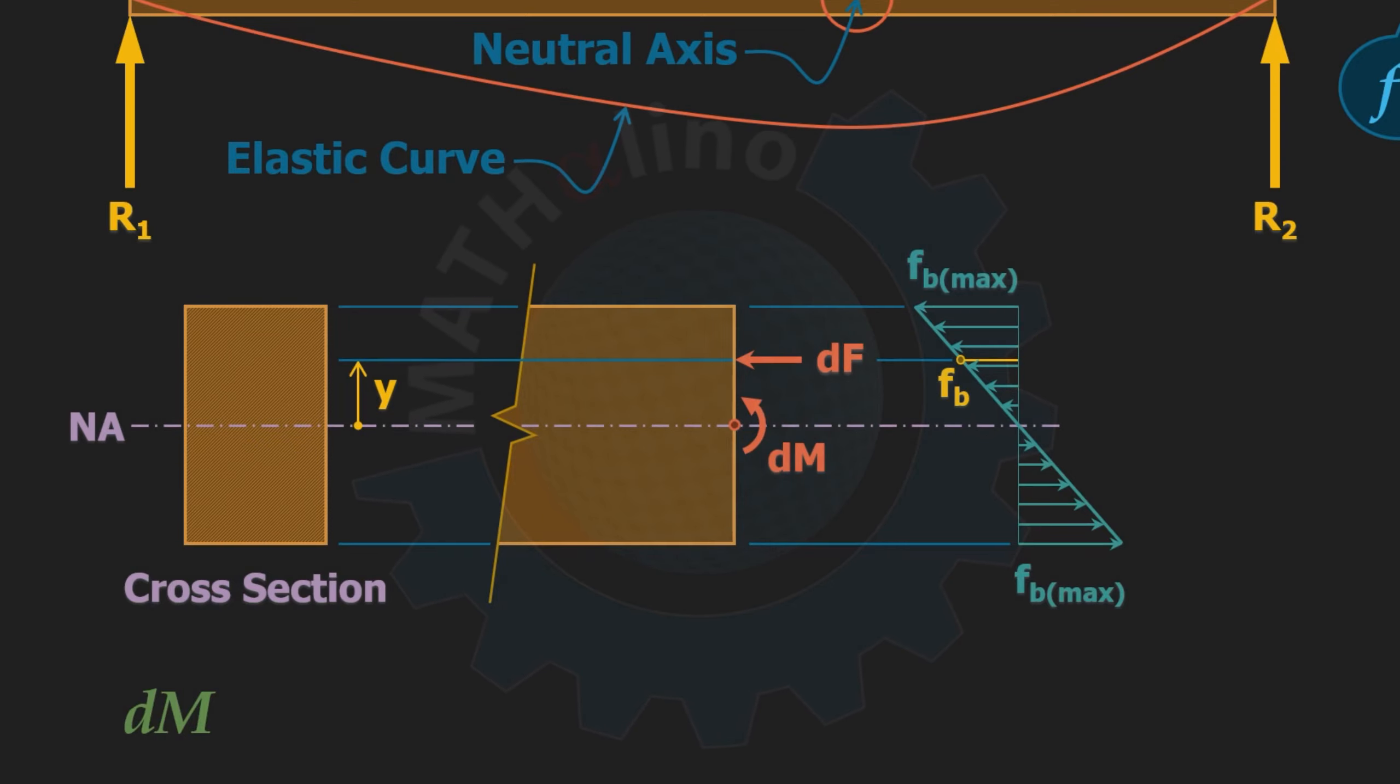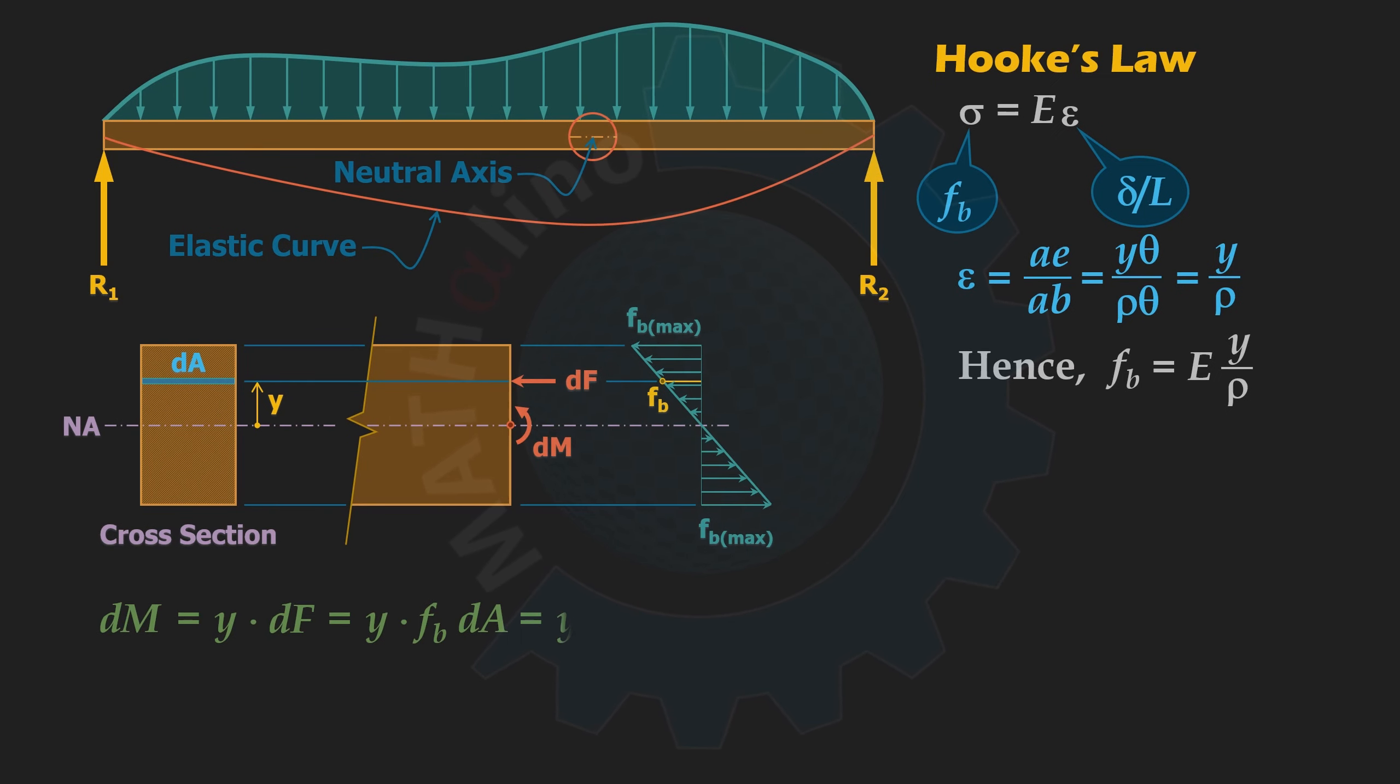This force df produces a differential moment dm at the neutral axis. The magnitude of this dm is equal to moment arm y times the force df. Note that force is equal to stress times the area, so we can replace df by fb times the differential area da where df is acting. Substitute fb is equal to E times y over rho.